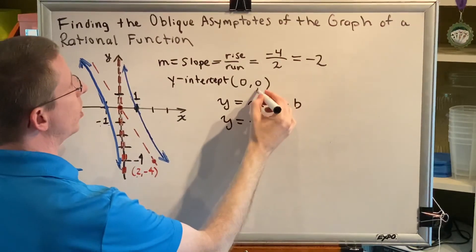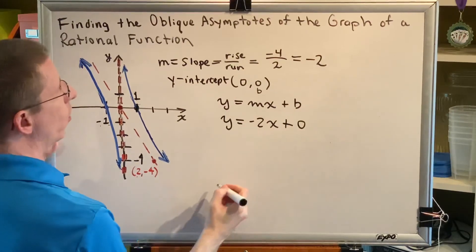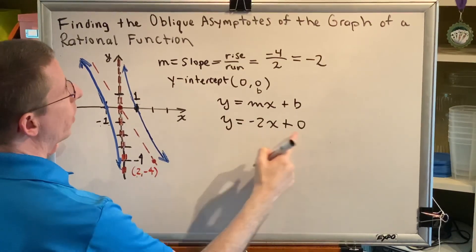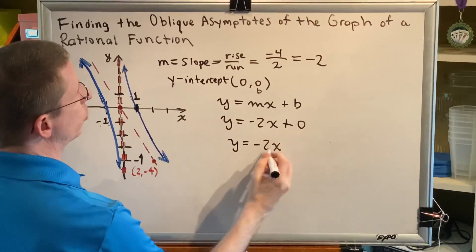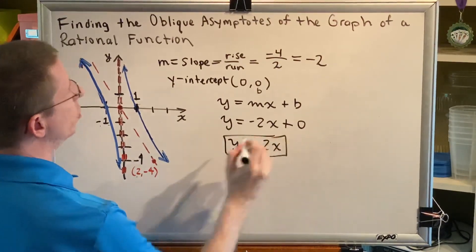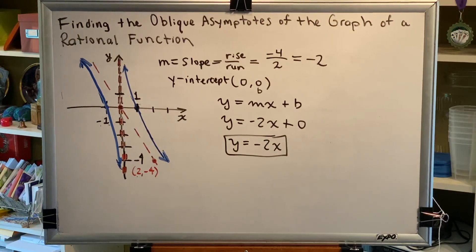b, which is the y-coordinate of the y-intercept, in this case is zero. And simplifying, anything plus zero is itself, so we get y is equal to negative two x. This is the equation of the oblique asymptote for the graph that's been provided to us.